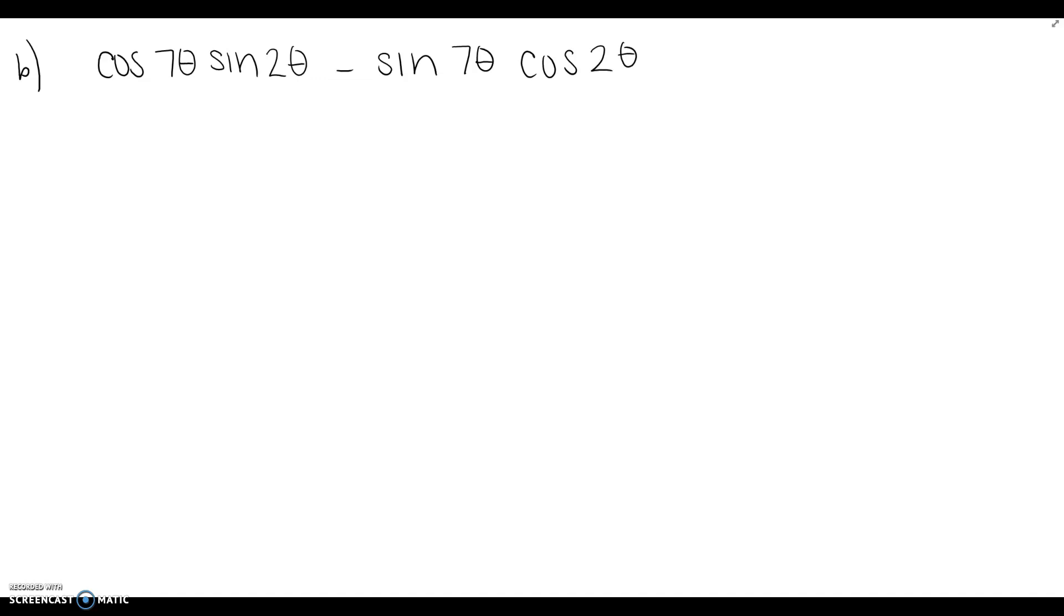The issue you're running into is we have cosine sine minus sine cosine. And if you're looking at your identities, that doesn't match up with any of them. However, you did learn, I have no idea when, like elementary school or middle school sometime, that we have a commutative property of multiplication. 2 times 3 is the same as 3 times 2. The order doesn't matter.